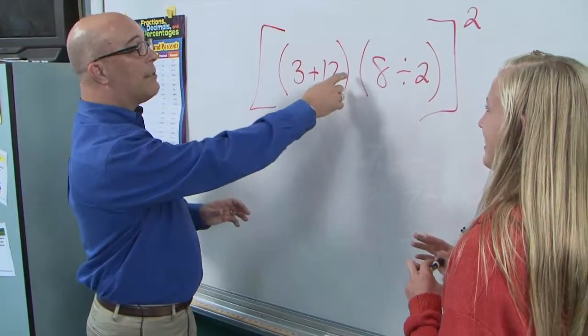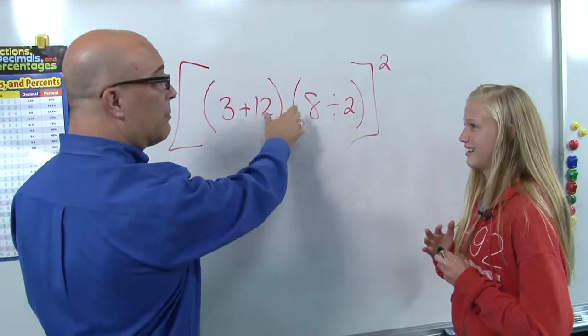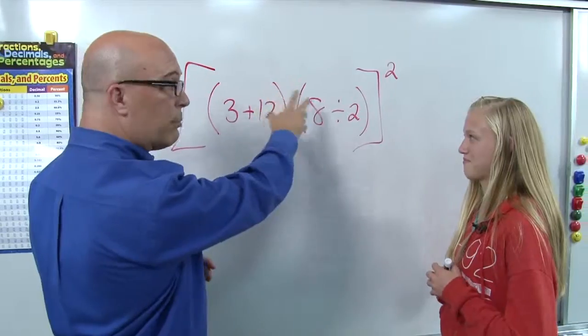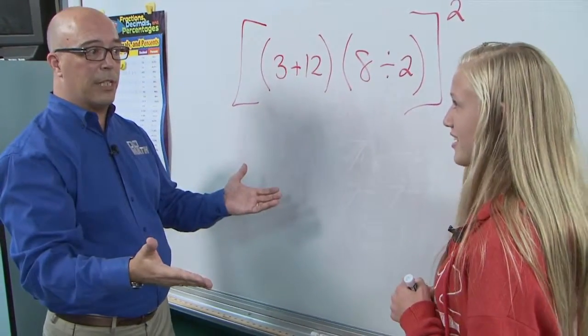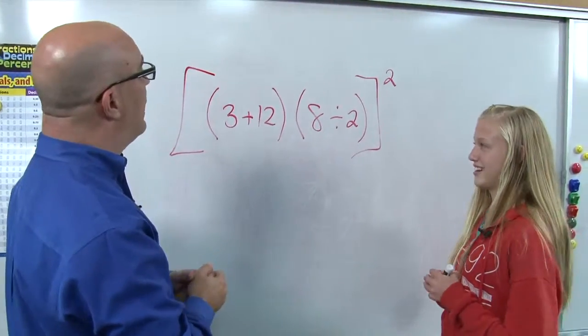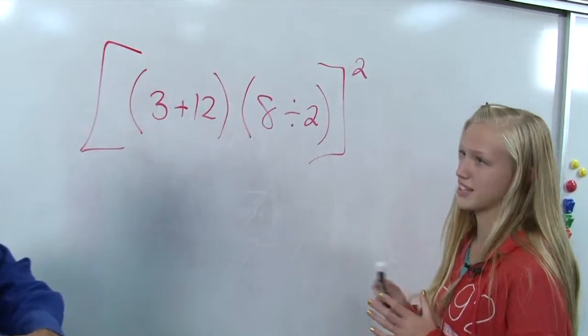So you read that nicely. Okay. So because a lot of times students will not remember that those are being multiplied, but when there's no symbol in parentheses, we know that those are being multiplied. Yeah, okay. How are we going to start this?